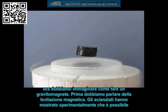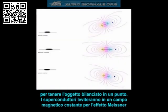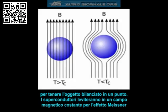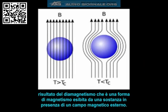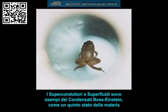Scientists have experimentally shown that it is possible to levitate a frog using strong magnetic fields, but the fields need to be oscillating back and forth because a unidirectional field produces rotation which needs to be stabilized in order to keep the object balanced in one place. However, superconductors will levitate in a constant magnetic field due to the Meissner effect, which is a result of diamagnetism — a form of magnetism only exhibited by a substance in the presence of an externally applied magnetic field. This is also what levitates the frogs: diamagnetism.